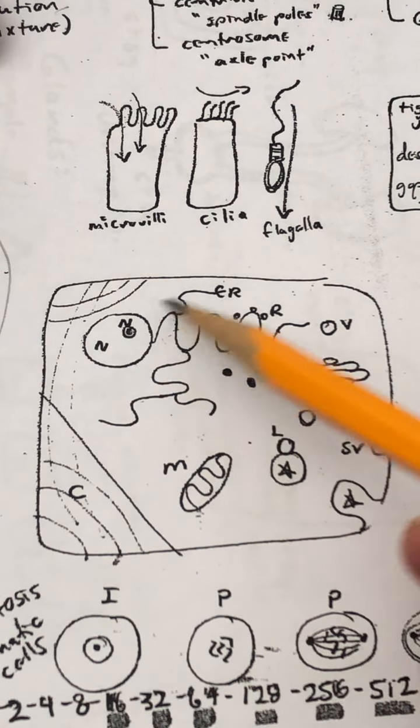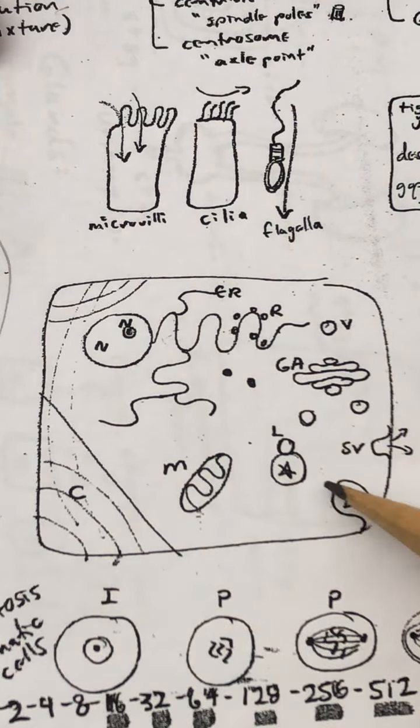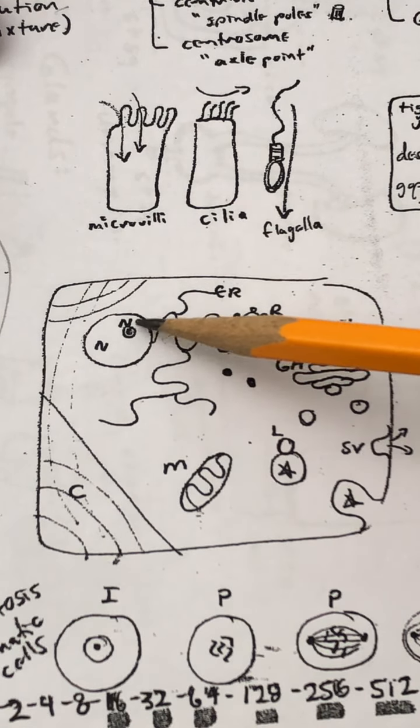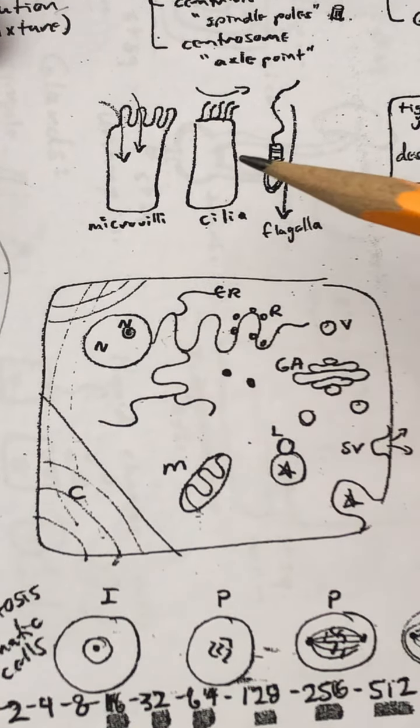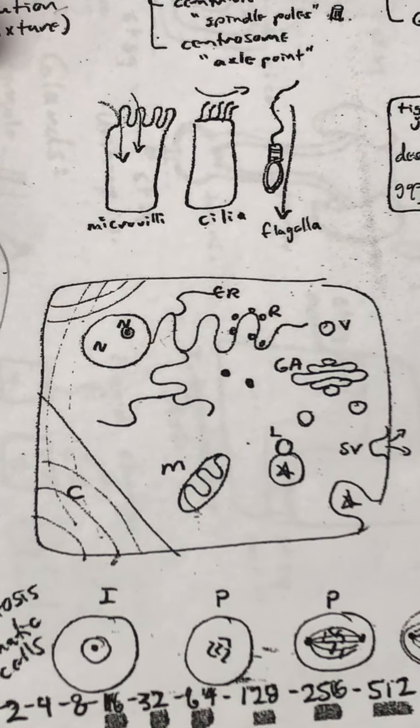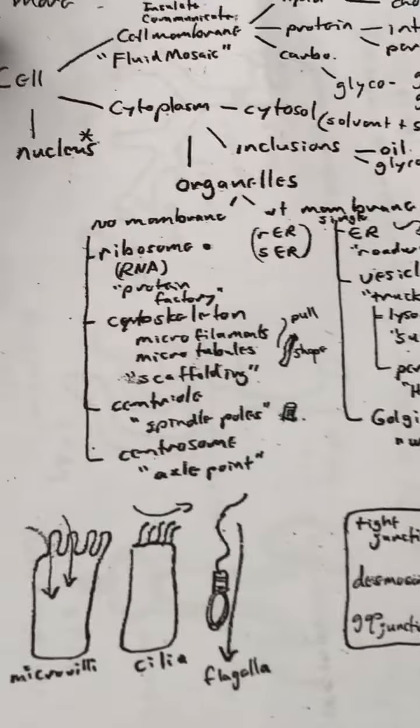Many people remember these names because of their general functions and nicknames that are offered to them. The nucleus is sometimes called the control center of the cell. And the mitochondria is called the powerhouse of the cell. We'll offer strange little things like that to sort of help it stick in your brain.